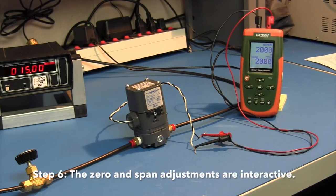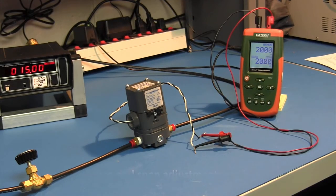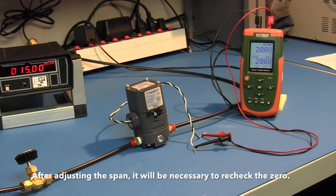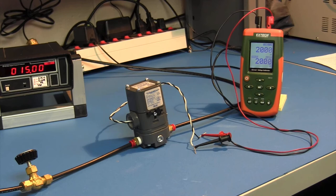Step 6. The zero and span adjustments are interactive. After adjusting the span, it will be necessary to recheck the zero. It may take two or three iterations to get the correct setting.